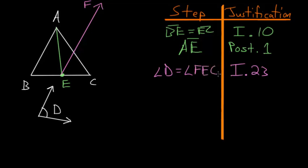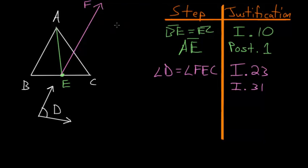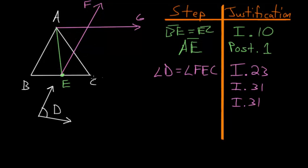Now we want to construct a line parallel to line BC starting at point A, which we can do because of Book 1, Proposition 31. Let's build this line through A parallel to BC. We'll call the intersection point G. Then we do essentially the same thing: we draw a line parallel to EF through point C.